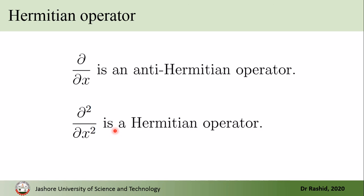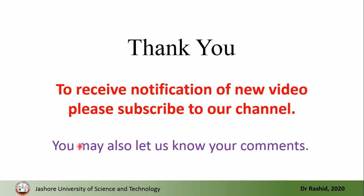So we have shown that the position and momentum operators are Hermitian operators. It can also be shown that d/dx is anti-Hermitian and d²/dx² is Hermitian. By showing this we can also show that the kinetic energy operator is a Hermitian operator — I leave that as a homework for the students. That's all for today, thank you.